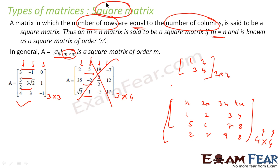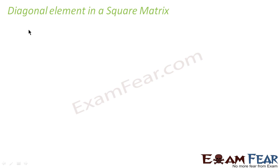Square matrices are very critical because for square matrices there are different subtypes which we will study. Some square matrices are also invertible, which we will study later. Square matrix is a special type of matrix that we should focus on more before understanding its subtypes.